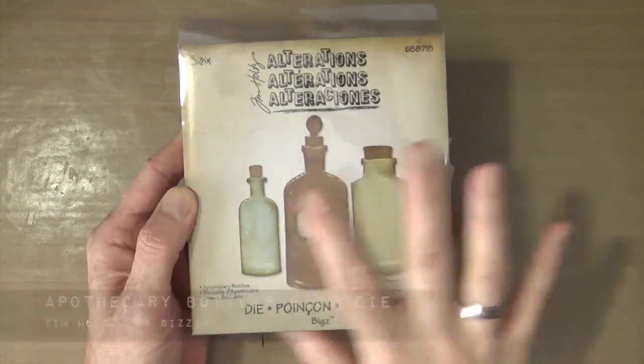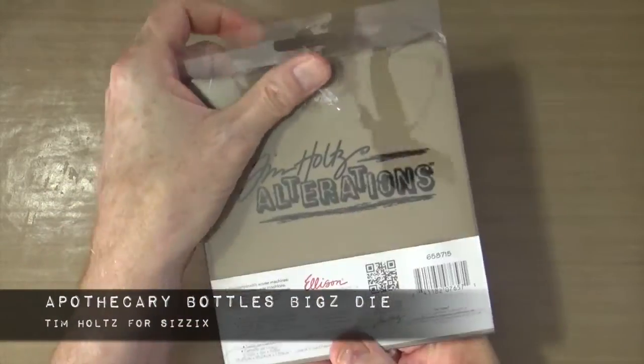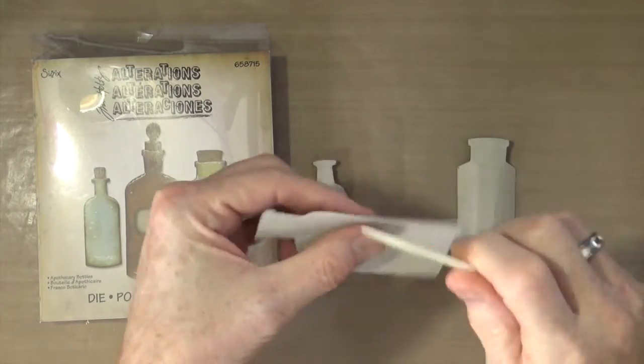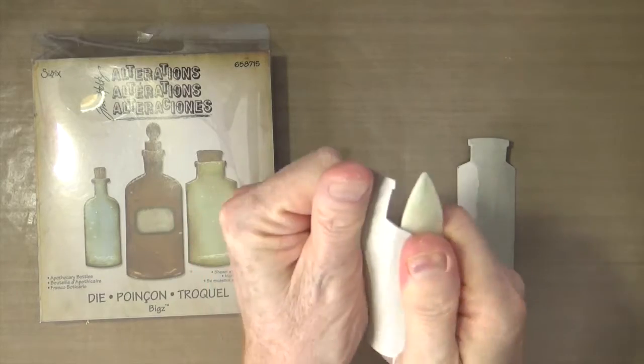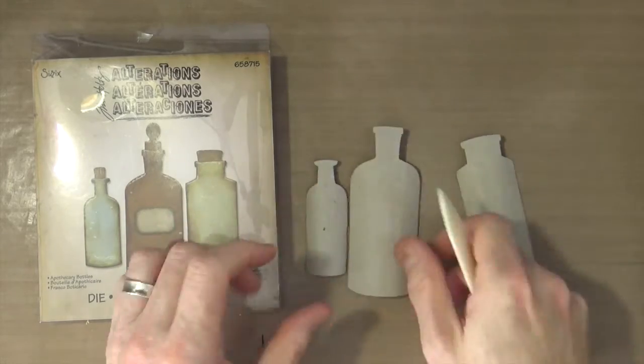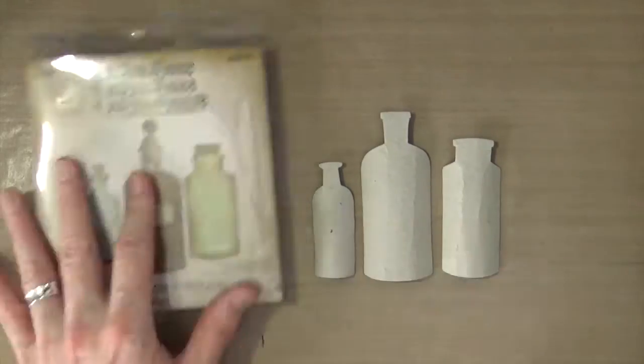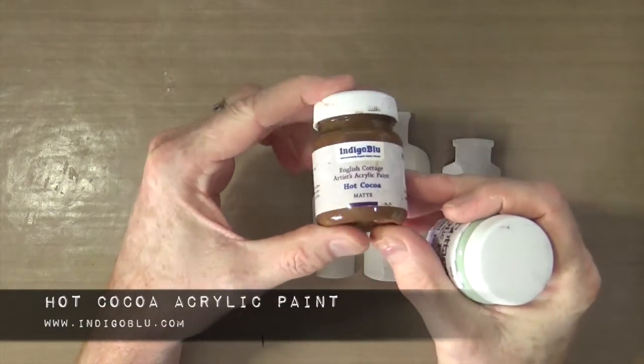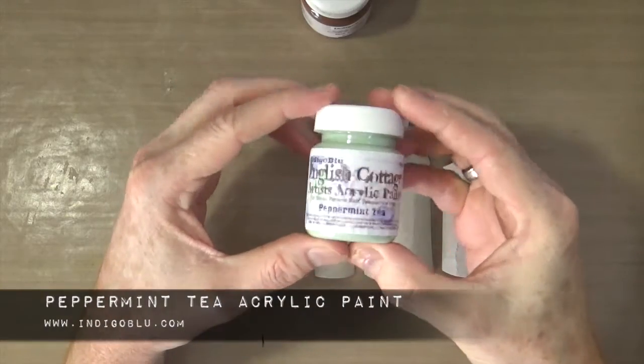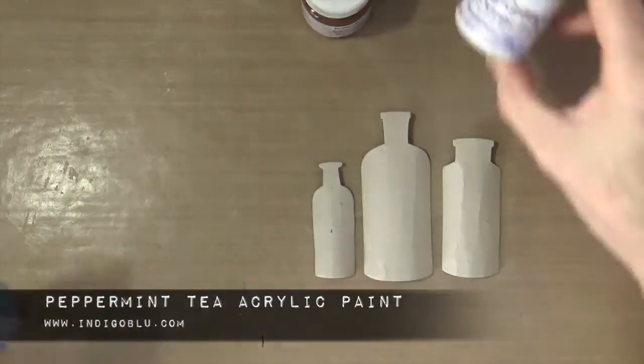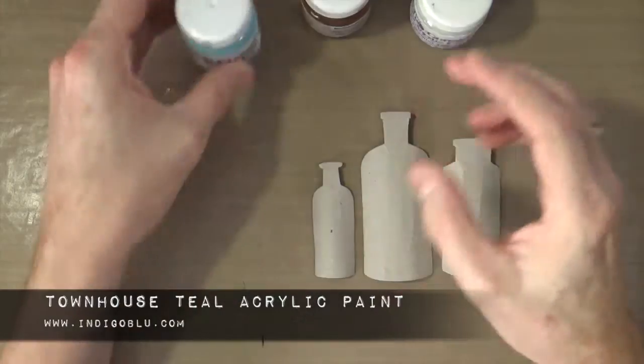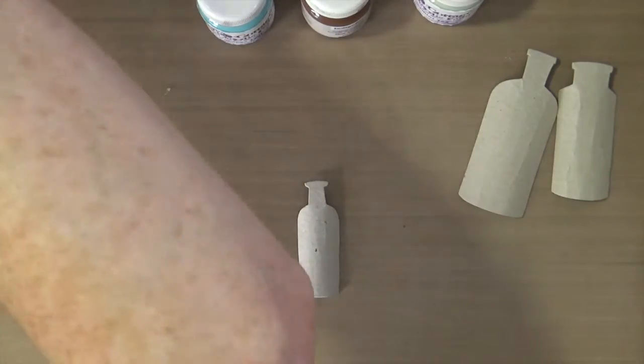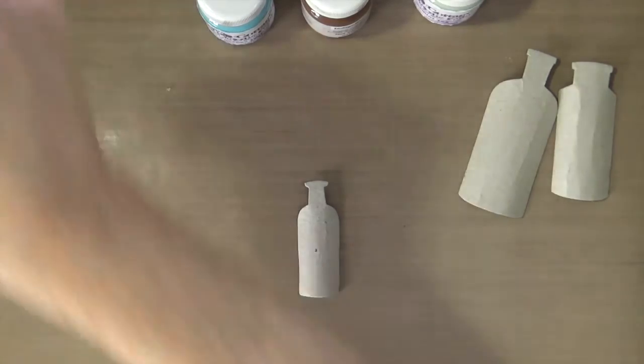To create the first embellishments for my canvas, I'm using the Apothecary Bottles Bigz Die from Tim Holtz and Sizzix. I've already run it through my Big Shot and cut it out of grey grunge board. I'm going to paint each bottle using hot cocoa acrylic paint, peppermint tea acrylic paint, and townhouse teal acrylic paint. Don't worry if you didn't catch those names, I'll list them again each time I use them.